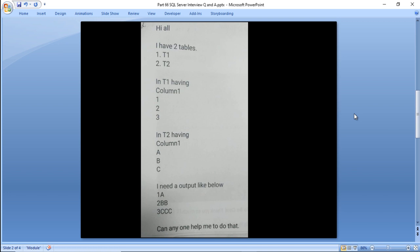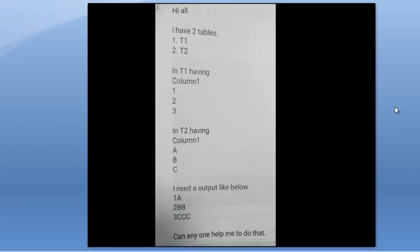This is our first question. As you can see, we are having two tables. The first table is T1 and the second is T2. T1 contains only one column with values 1, 2, and 3. Table T2 contains only one column with values A, B, and C. In the output we want to see 1A, 2BB, 3CCC — the values from T2 should repeat as many times as the corresponding number in T1. So A comes once, B comes twice, and C comes three times.